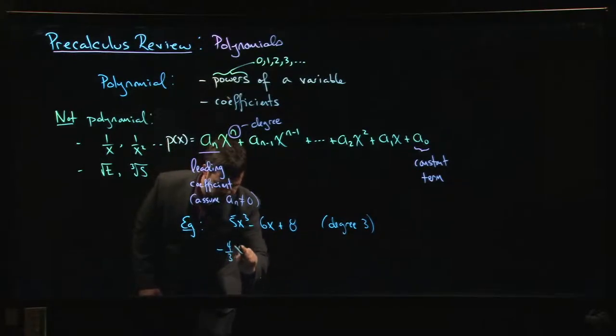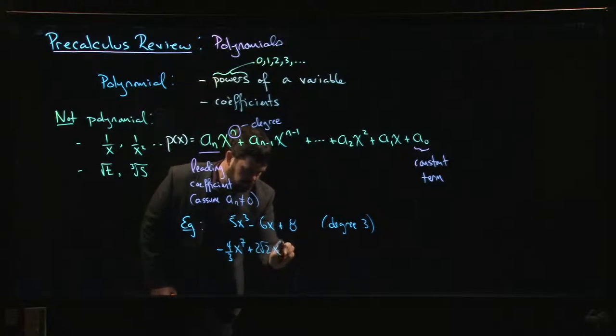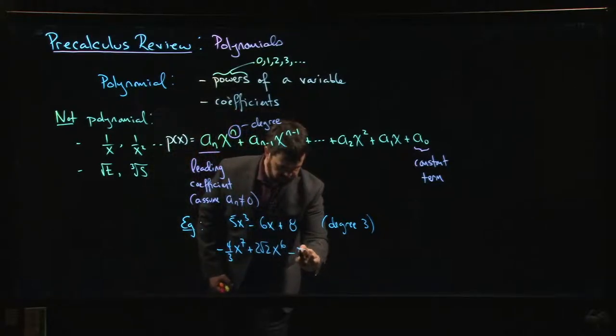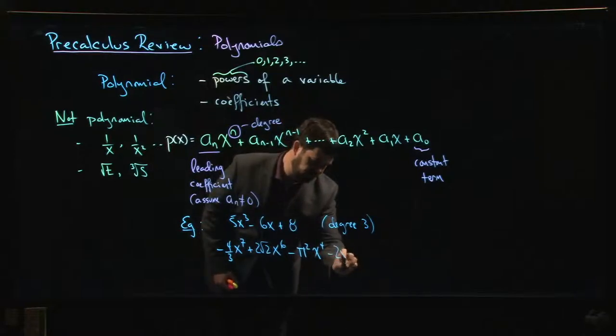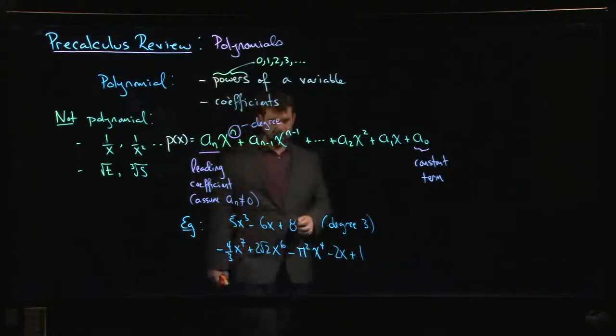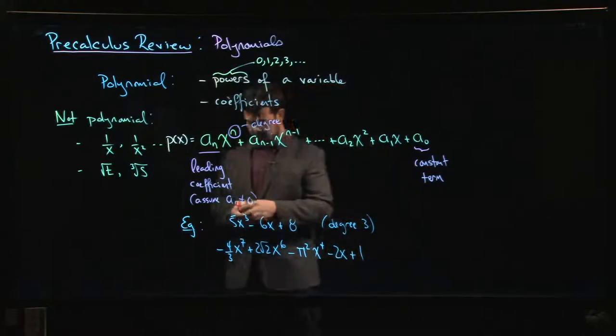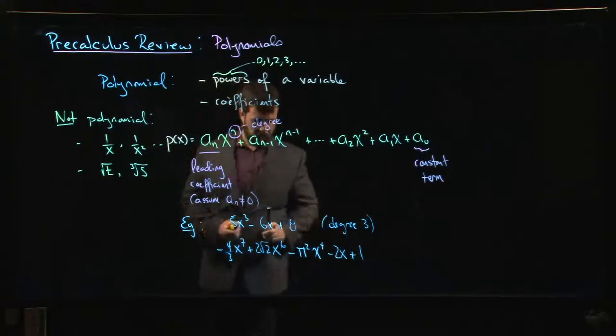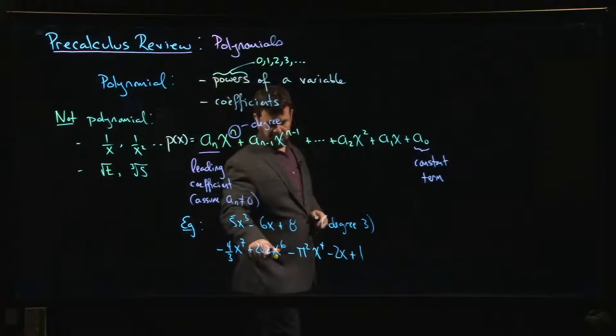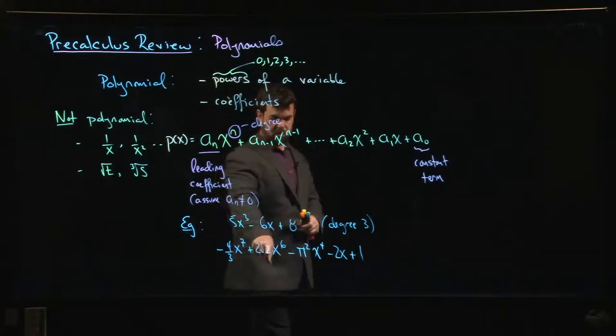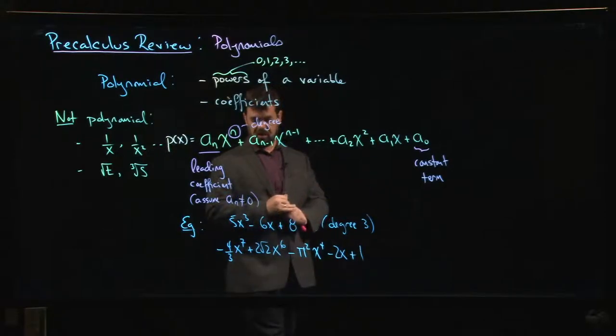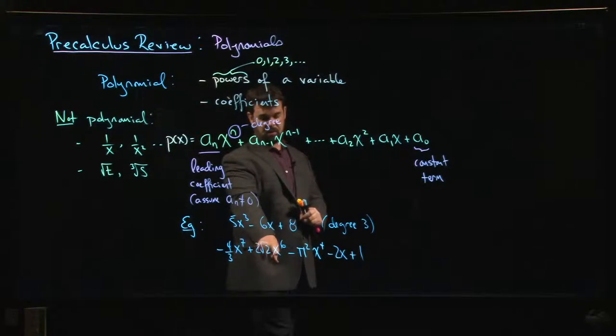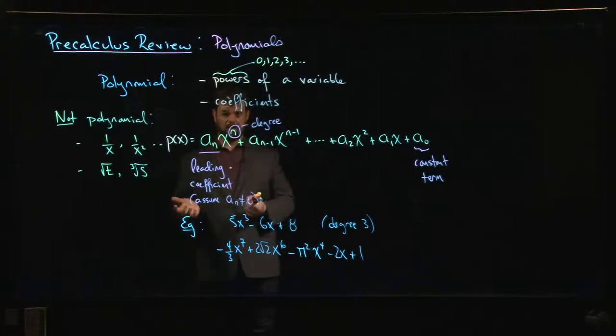Let's do another one: minus four thirds x to the seven plus two root two x to the six minus pi squared x to the four minus two x plus one. That's a polynomial whose degree is seven. Constant term is one. You'll notice there are some kind of questionable looking things here, but these are coefficients. Root two is a real number, it's okay to have square root of a number. Pi is irrational, that's okay. You can have irrational coefficients. You just don't want to have square root of x. Square root of two is okay, square root of x is not okay. So these are examples of polynomials.